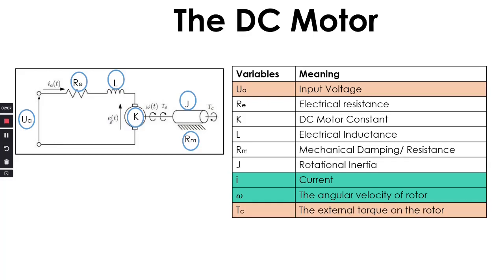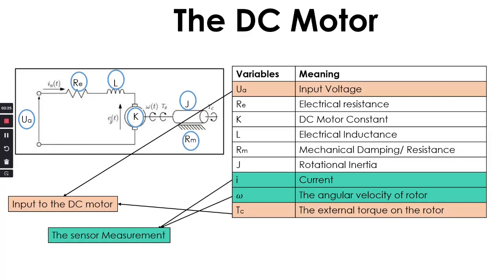This is the table which gives variables and their meaning. The cells marked in red are our inputs to the DC motor, which are the input voltage and the external torque. The cells marked in green are the sensor measurements that will be our output for the machine learning task, and we will output this from the Simulink model as a CSV file.